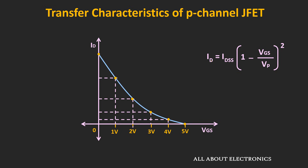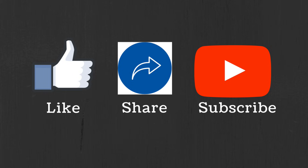So this is all about the transfer characteristic of the N channel as well as the P channel JFET. So I hope in this video, you understood what is transfer characteristic and how we can draw a transfer characteristic for the N channel as well as the P channel JFET. And we will use this transfer characteristic as well as these equations whenever we discuss the different biasing techniques for the JFET. So if you have any question or suggestion, do let me know here in the comment section below. If you like this video, hit the like button and subscribe to the channel for more such videos.